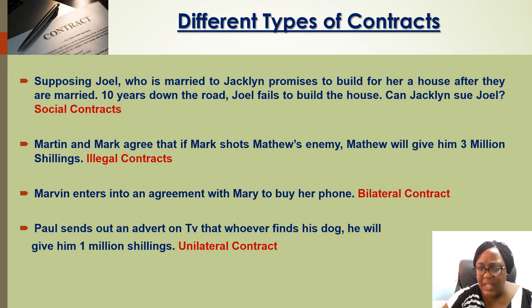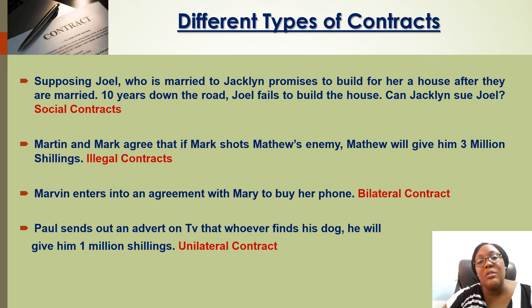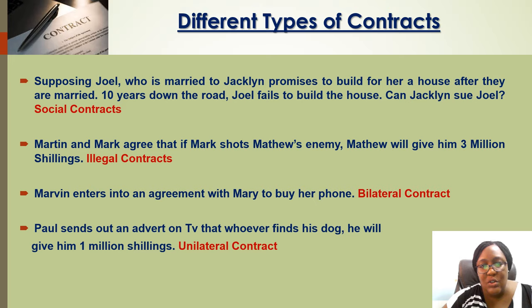Then we have bilateral contracts — 'bi' meaning two. These are contracts between two people. These are opposed to unilateral contracts, where one person contracts with the rest of the world. For example, if I send out an advert saying whoever finds my dog I'll give them 10 million shillings, that's a unilateral contract between me and anyone out there. Social contracts where people promise things — like 'I'll love you next year' — have no real substantial legal strength; they're social affairs.